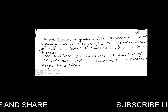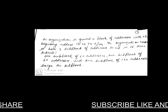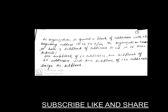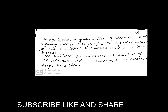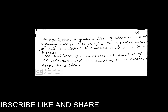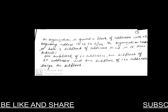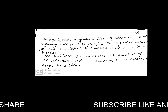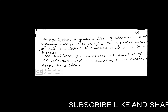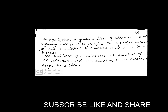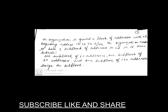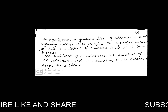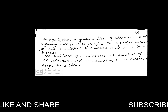An organization is granted a block of addresses with the beginning address 14.24.74.0/24. The question says the organization needs three sub-blocks: the first sub-block has 10 addresses, another has 60 addresses, and the third has 120 addresses.